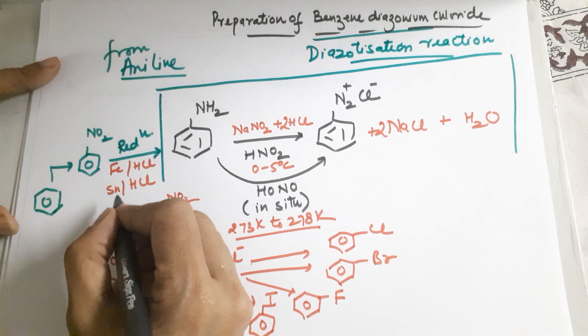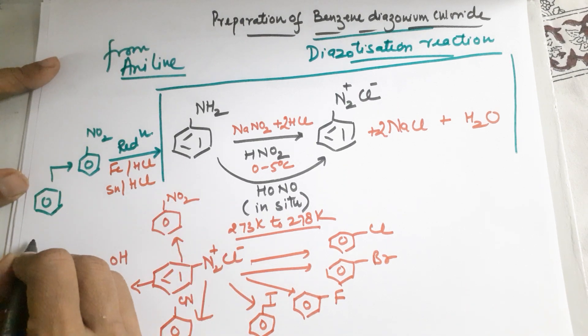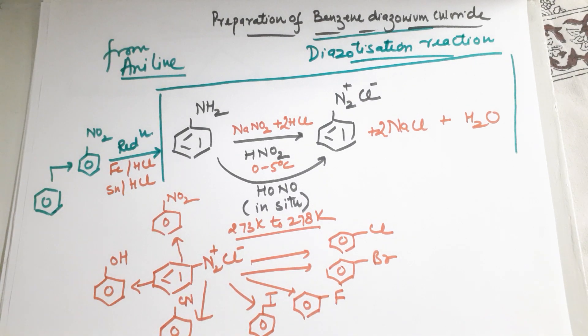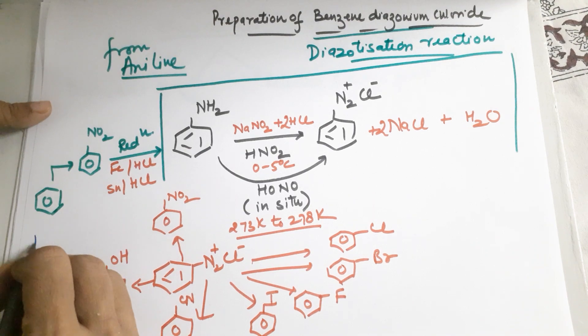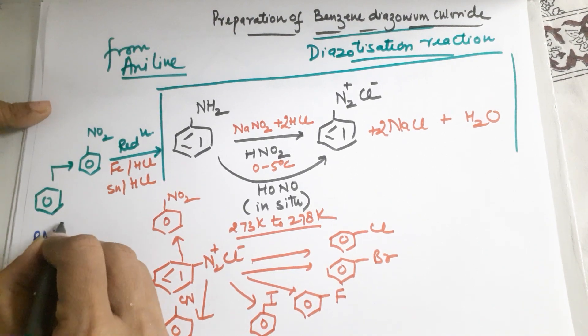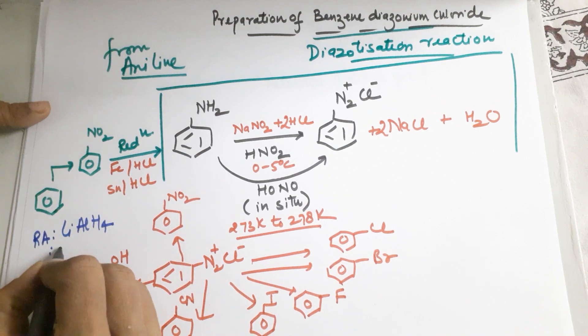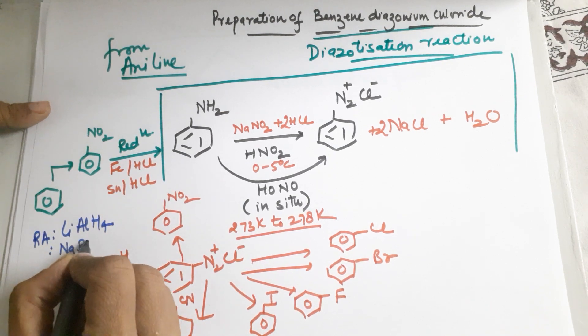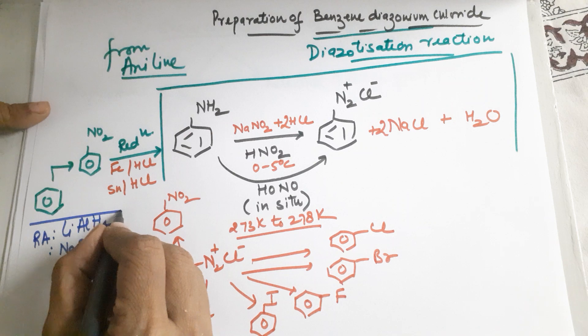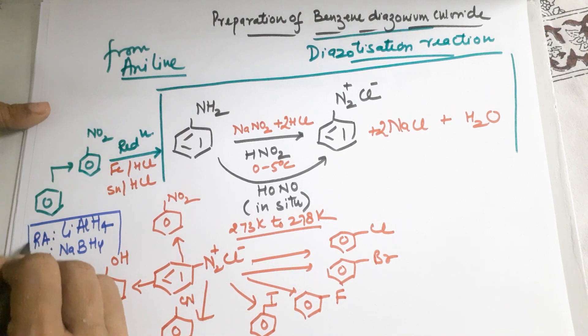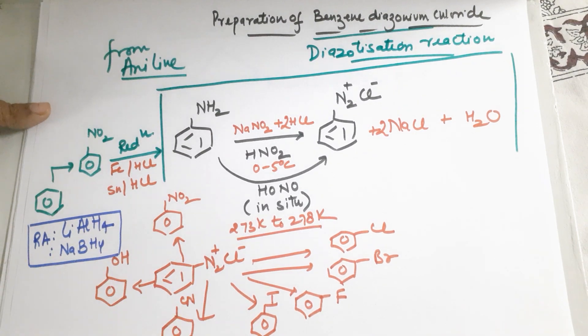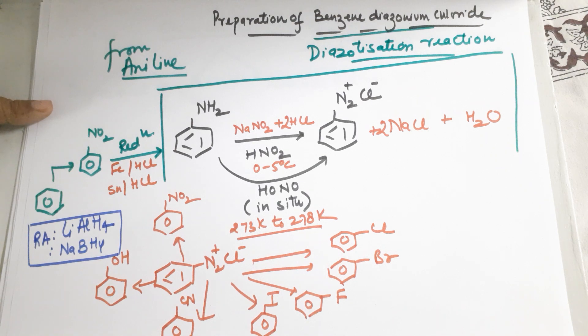The third reducing agent, if suppose you're stuck and you don't remember the reducing agents, then the best is you should know there are reducing agents which you can use if you're stuck. You can use lithium aluminum hydride or sodium borohydride.